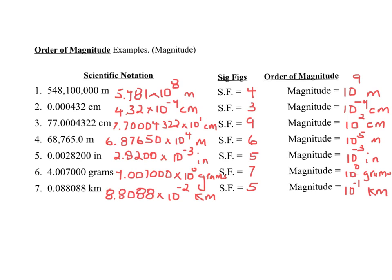And the final one, be careful, the 8 is bigger than 5, so we're going to go up 1 power of 10 from this factor right here. If you go up 1 from negative 2, you get to negative 1. So the magnitude there is 10 to the negative 1. Watch out for those.